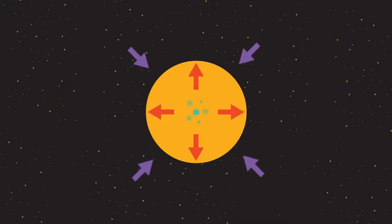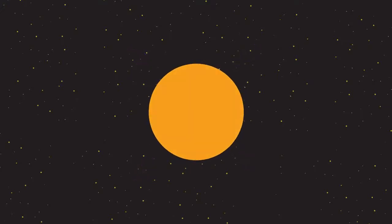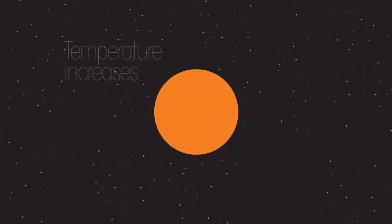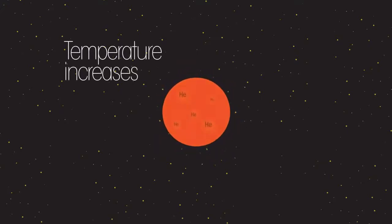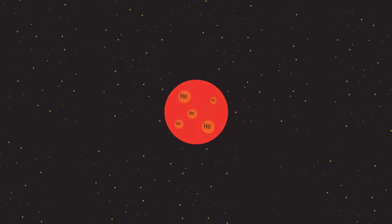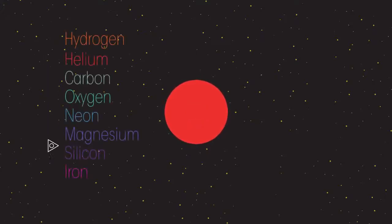Now the outward force of fusion is less than the inward force of gravity. This causes the star to collapse inward and the temperature to increase. It becomes so hot that helium nuclei can now begin to fuse together to form heavier elements, but only as far as iron.